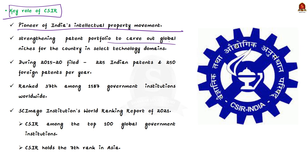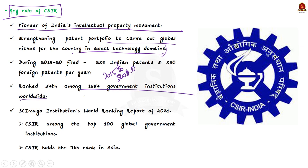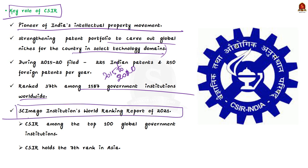CSIR is a pioneer of India's intellectual property movement, strengthening its patent portfolio to carve out a global niche in select technology domains. It filed about 225 Indian patents and 250 foreign patents per year during 2015–20. CSIR is ranked 37th among 1,587 government institutions worldwide. According to the SCImago Institutions World Ranking 2021, CSIR is the only Indian organization in the top 100 global government institutions, holding 7th rank in Asia.